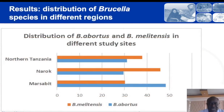The distribution of Brucella species varied across the different regions, with northern Tanzania and Narok having a higher proportion of Brucella militensis as opposed to Brucella botas, while the Masterbeet region had a higher proportion of Brucella botas.